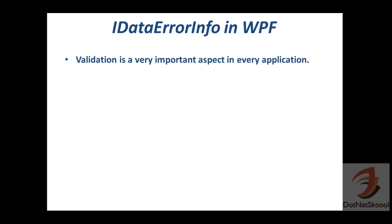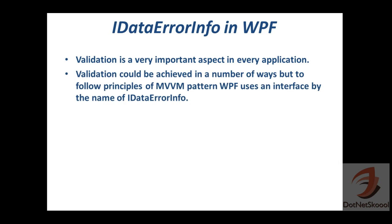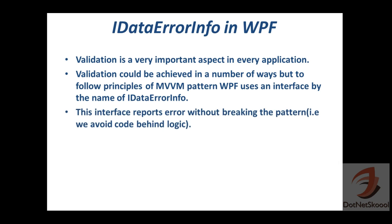Validation is a very important aspect in every application. Validation can be achieved in a number of ways, but to follow the principles of the MVVM pattern, WPF uses an interface called IDataErrorInfo. This interface reports errors without breaking the pattern — meaning we avoid code-behind logic. If you are following the MVVM pattern, you need to implement IDataErrorInfo; otherwise you'll end up writing a lot of code-behind for reporting errors.